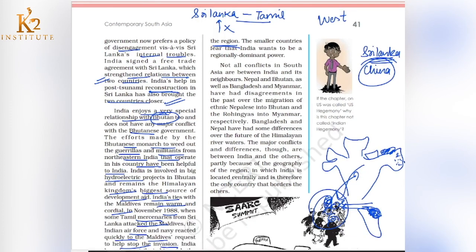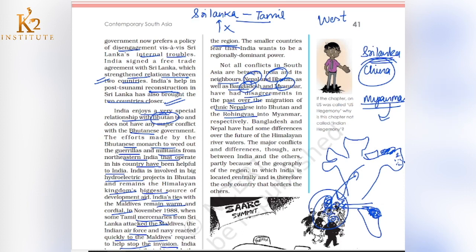Not all conflicts in South Asia are between India and its neighbors. Nepal and Bhutan, as well as Bangladesh and Myanmar, have had disagreements over the migration of people. For example, Rohingya Muslims from Myanmar enter Bangladesh, creating tension between Bangladesh and Myanmar. There are also river-related issues between Nepal and its neighbors involving the Himalayan rivers.